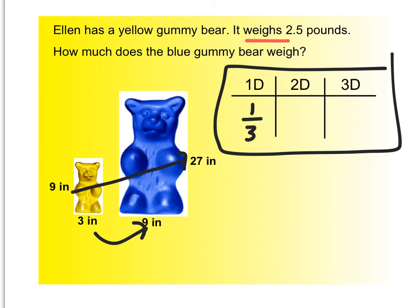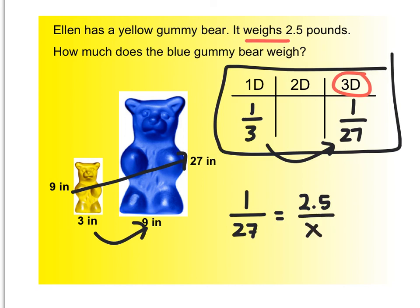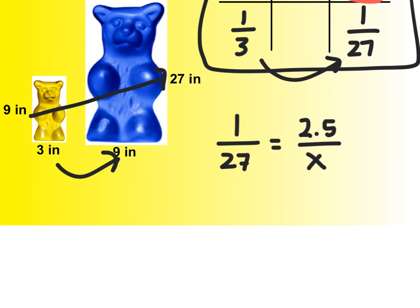Now, the key word in this problem is the word weighs. And weight is a three-dimensional vocabulary term. So, anytime you see weight, you should think volume. Okay, so if the weight is 2 1⁄2 pounds, I'm going to want to find the ratio of the volumes, which in this case would be 1 over 27. I take 1 cubed over 3 cubed, and I get 27, or 1 over 27. So, if the ratio of the volumes is 1 to 27, then if the small gummy bear weighs 2 1⁄2 pounds, we've got some work to do to find the weight of the larger gummy bear.